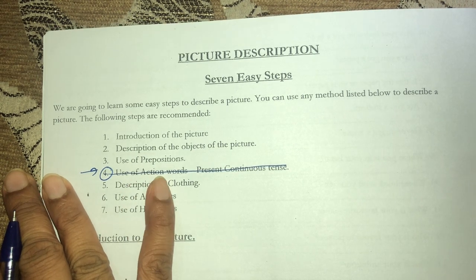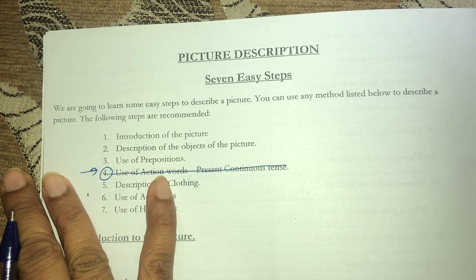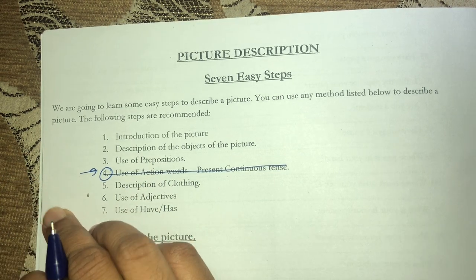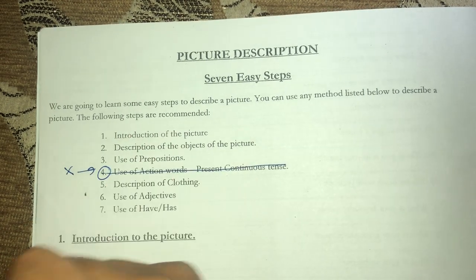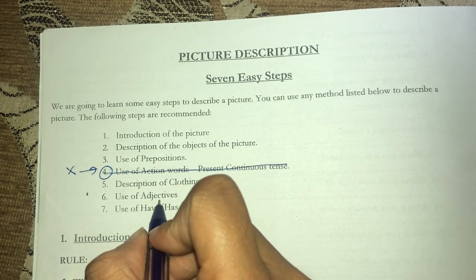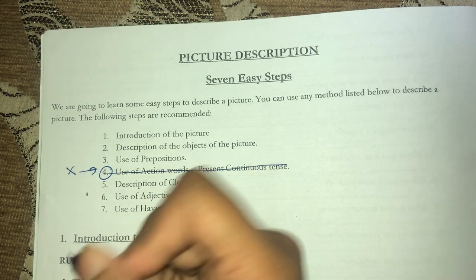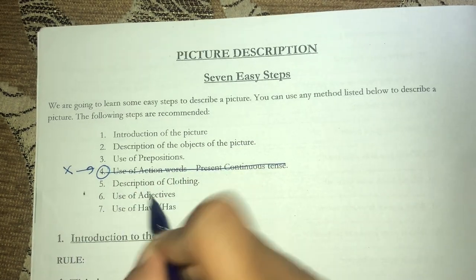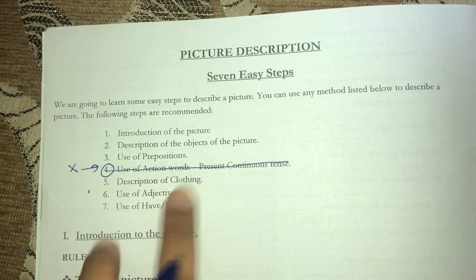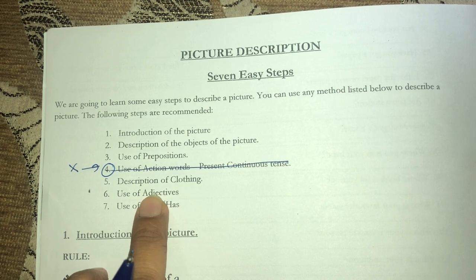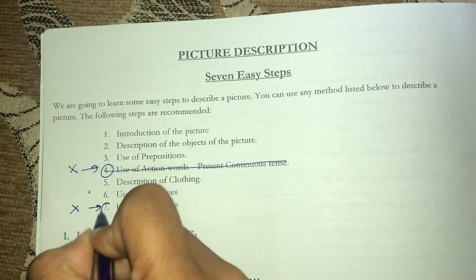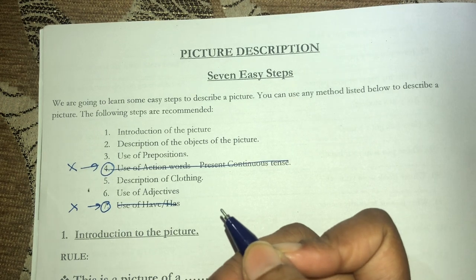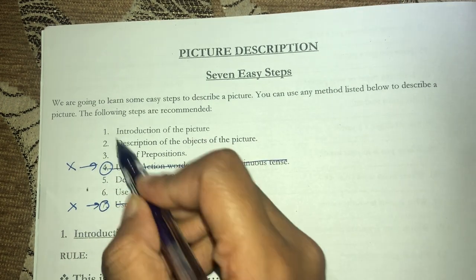Use of action words or present continuous tense is not in your grade - it's only in Preparatory Grade. So if you choose not to use it, don't. If you want to use it, use it properly. Then for description of clothing: 'He is wearing a T-shirt / She is wearing a dress.' Use of adjectives - yes, you did adjectives in this grade, so use all adjectives you know from the word book. Use of 'have/has' is also for Preparatory, so you don't have to use it if you don't want.